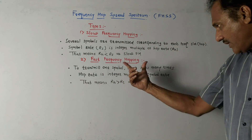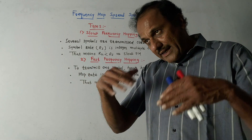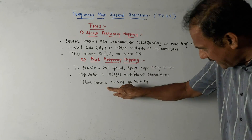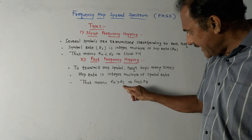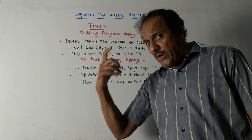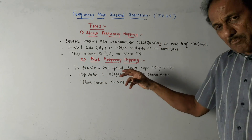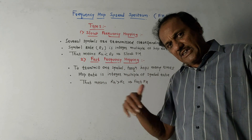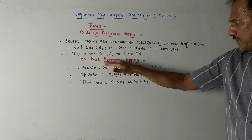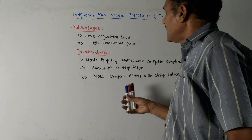In fast frequency hopping, to transmit one single symbol, the frequency hops many times. The hop rate is an integer multiple of the symbol rate — that is, hop rate Rh is greater than symbol rate Rs. It is therefore called fast frequency hopping. The major advantage of fast frequency hopping is that if anyone tries to jam the signal, the carrier frequency changes to a new value before jamming can occur, making it difficult to jam. So fast frequency hopping is often preferred.